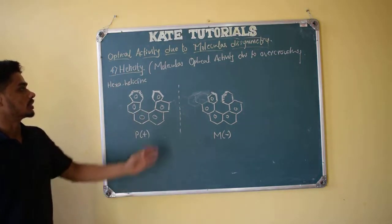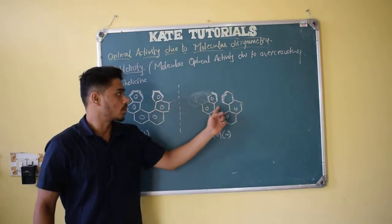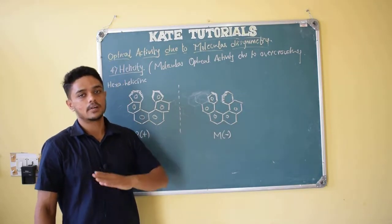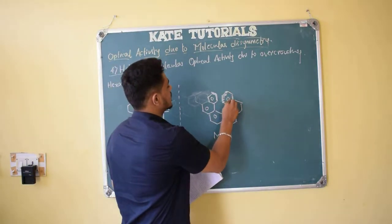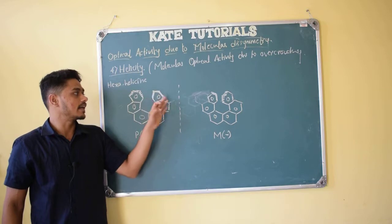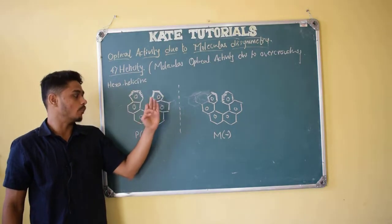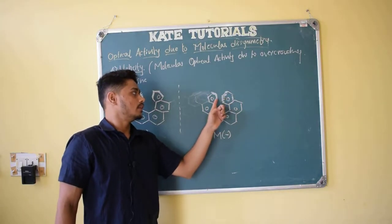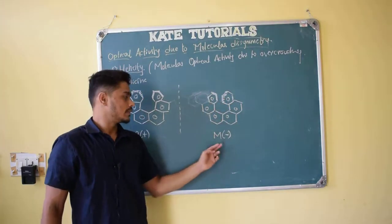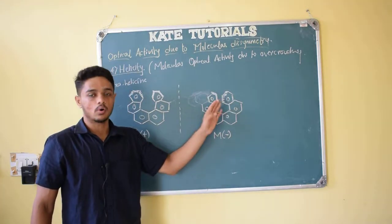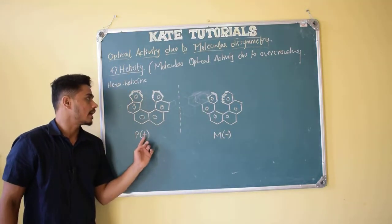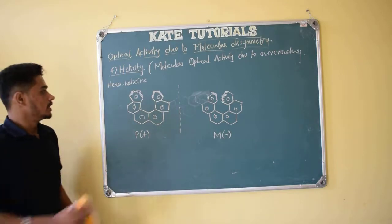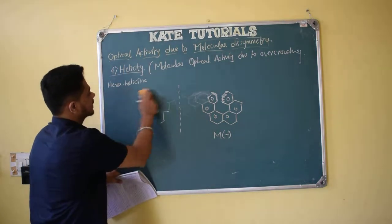This is the nomenclature for helical compounds exhibiting molecular optical activity due to overcrowding. Because of overcrowding, one end goes above and one goes below, so the plane of symmetry is absent and the molecule becomes optically active. If the right-handed end goes above: P plus. If the right-handed end goes below: M minus. Equivalently, if the left-handed end goes above: M minus. Right-handed above is P plus; right-handed below is M minus.